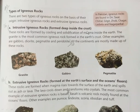Intrusive igneous rocks form deep inside the crust. These rocks are formed by cooling and solidification of magma inside the crust. Inside the ground, magma cools down and is converted into solid rock — that is igneous rock. Granite is the most common intrusive igneous rock, found underground. Other examples are gabbro, diorite, pegmatite and peridotite. All the continents are mostly made up of these rocks.